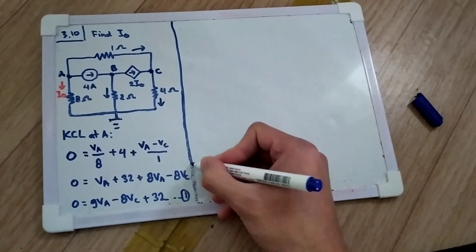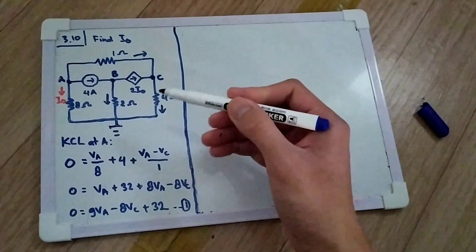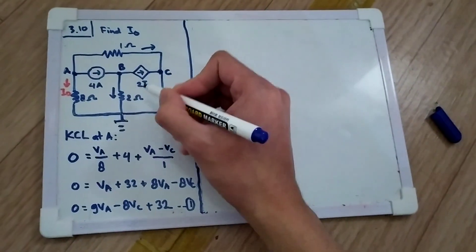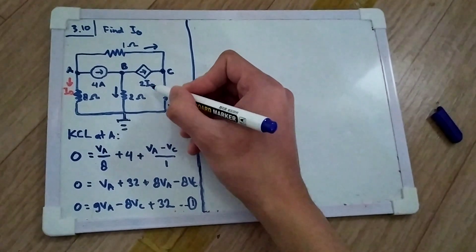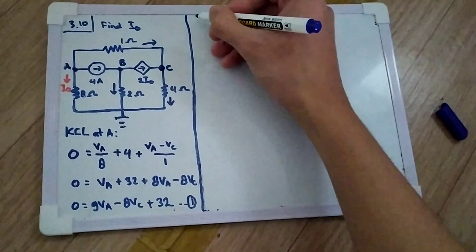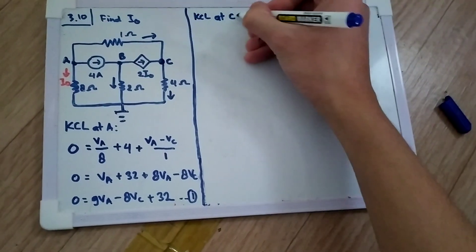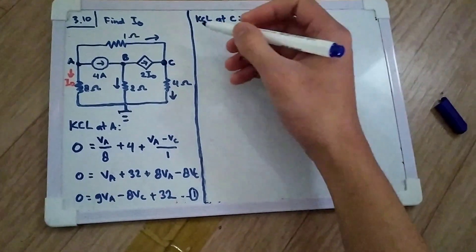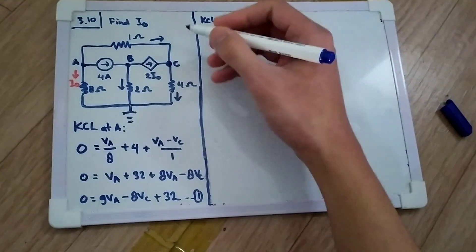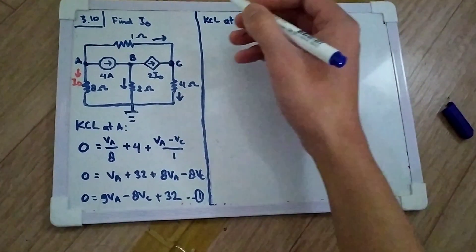Another node that has I0 in it is node C. There is a current source with value two times I0. I will apply KCL at node C. The current that goes in is equal to the current that goes out.